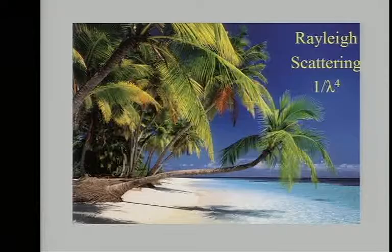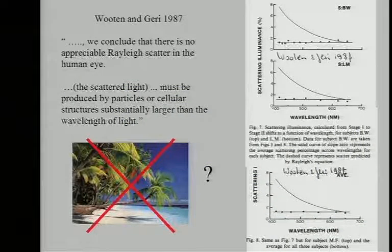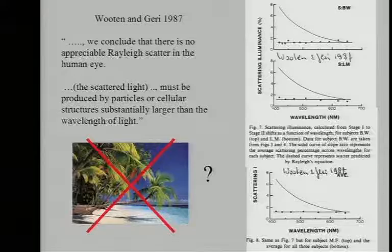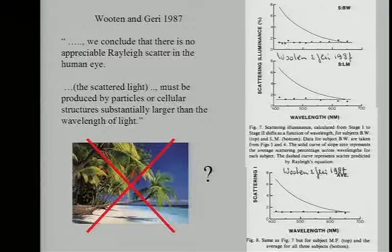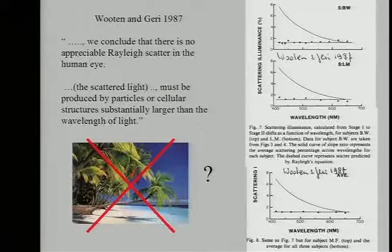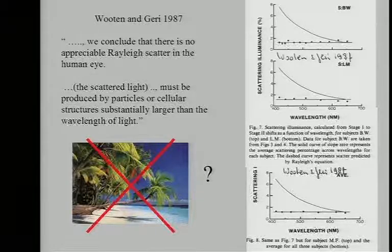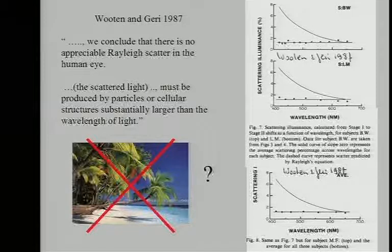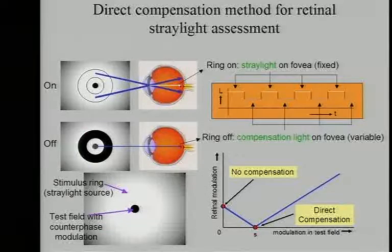Is light scattering in the eye predominantly blue? People started to try to measure that, and several experiments were done. In 1987, Wooten and Geary did a very comprehensive experiment and found a completely flat spectral dependence — no spectral dependence at all. The spectral dependence expected from Rayleigh-type light scattering would be very strong. This was a huge difference between the two results, and everybody was stunned and did not understand what could cause light scattering in the eye.